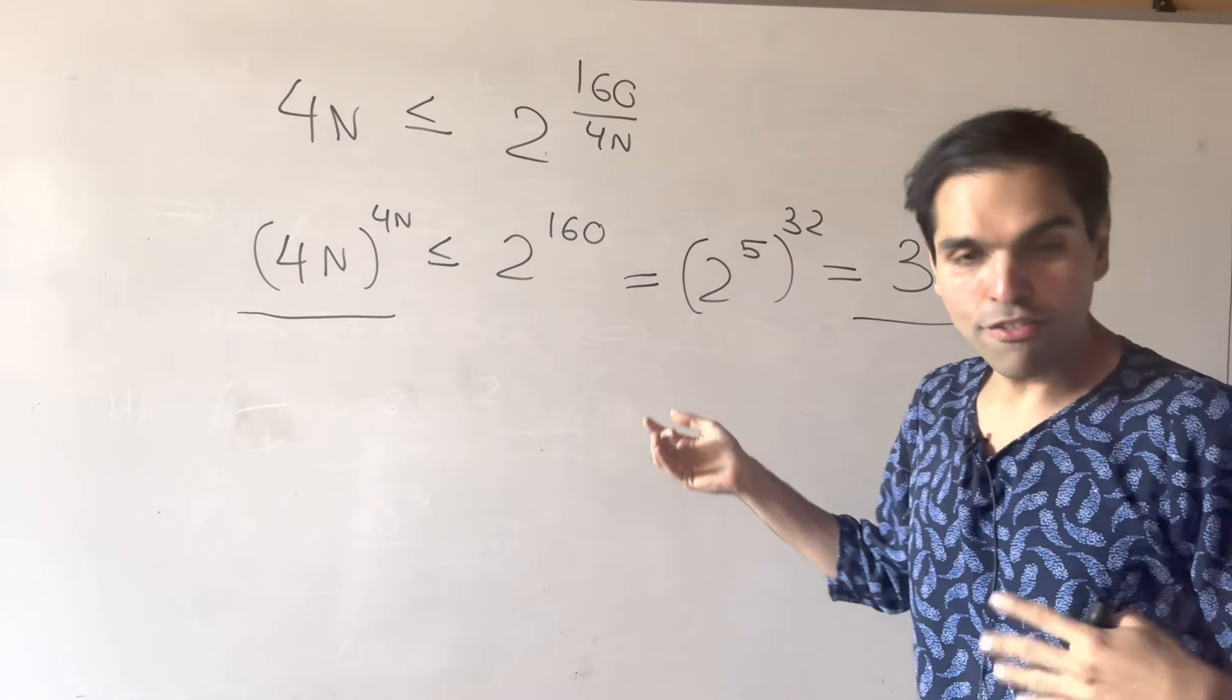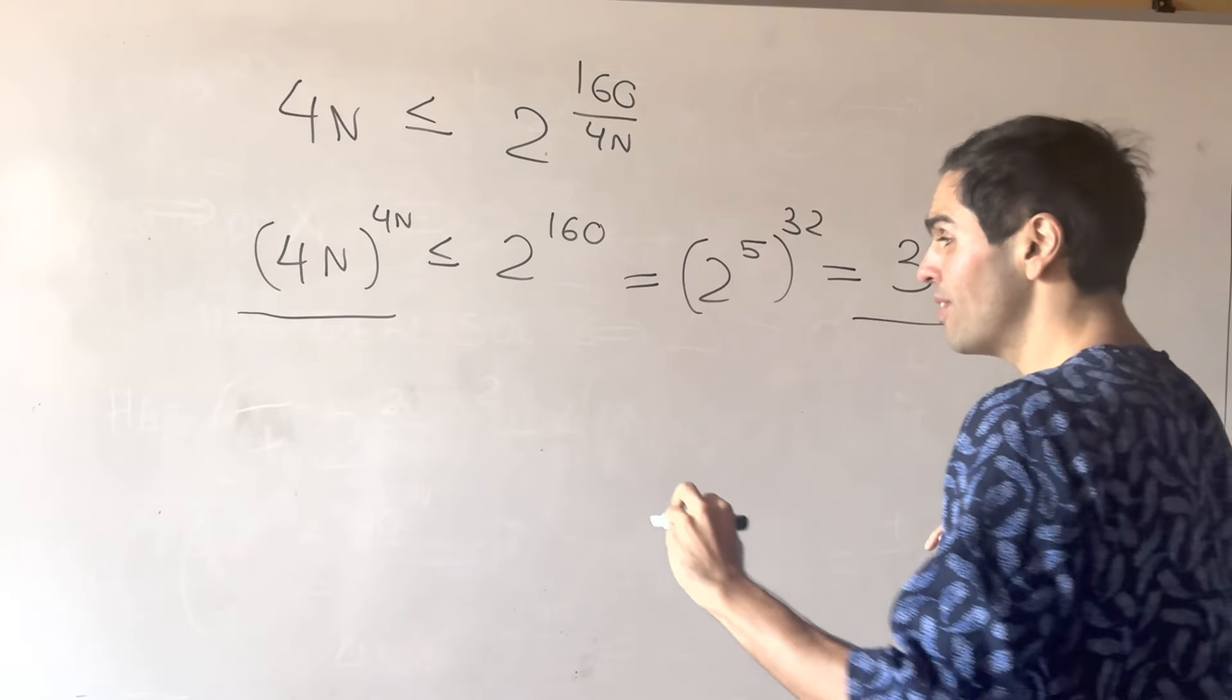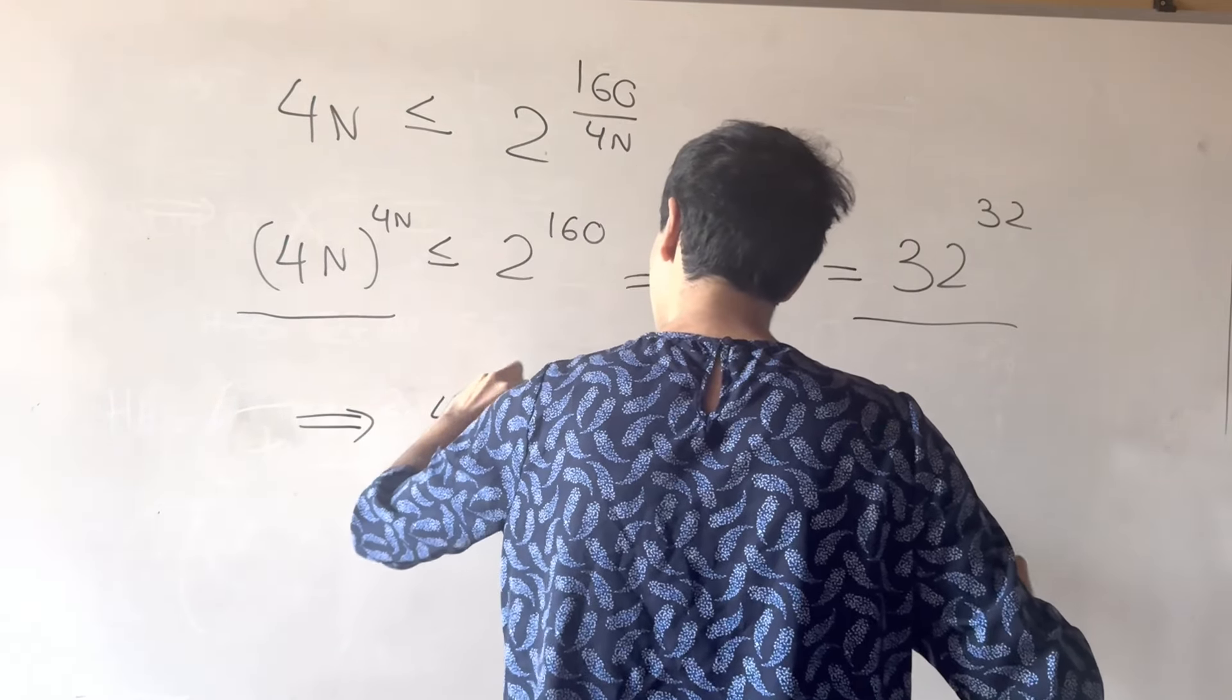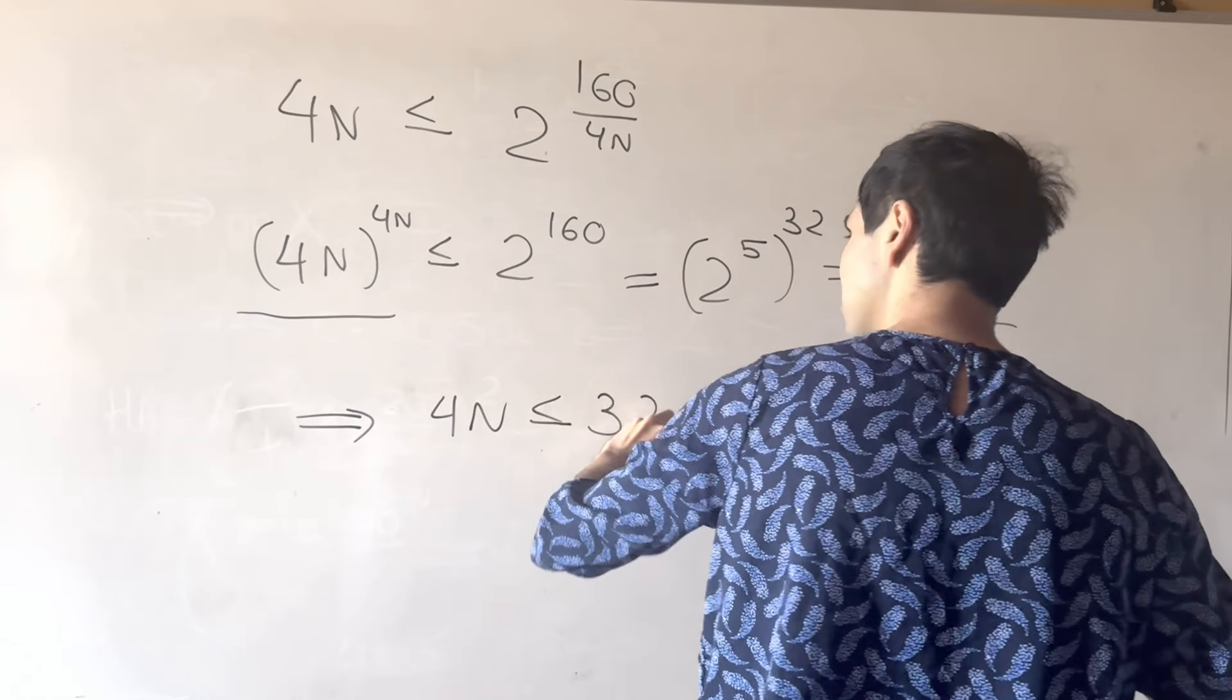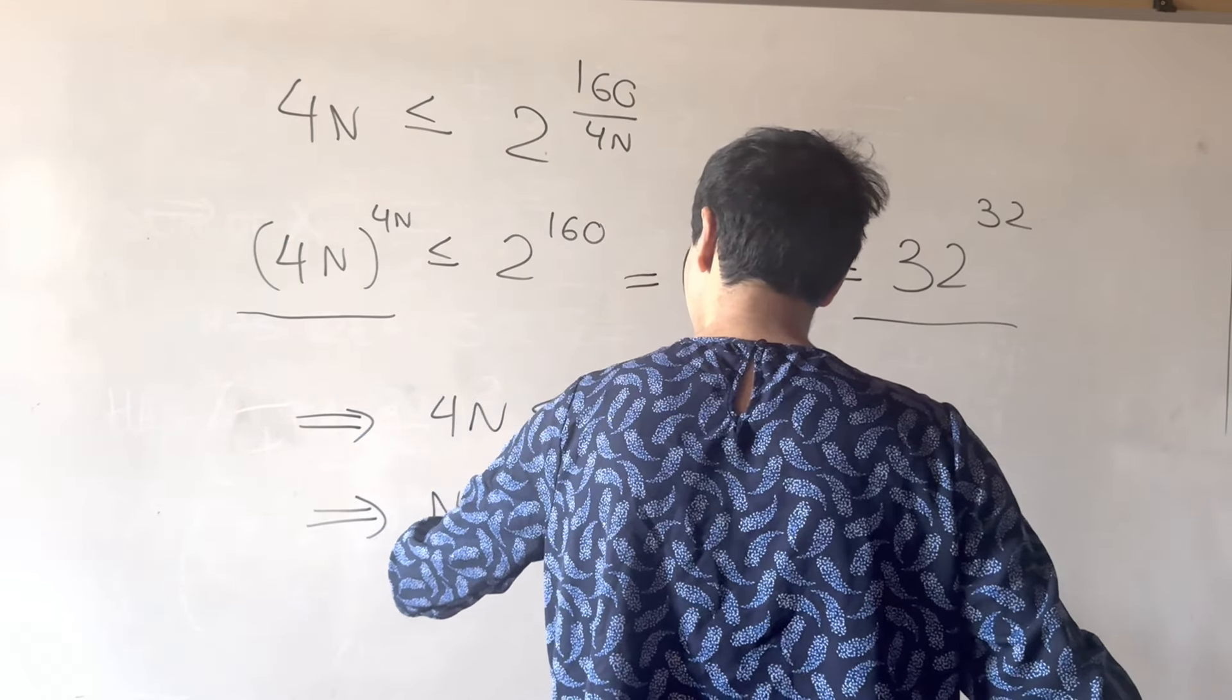So, you see, (4n)^(4n) is less than or equal to 32^32. But, now, because the function x^x is strictly increasing, what this really implies is that 4n has to be less than or equal to 32.